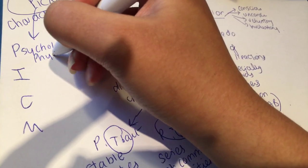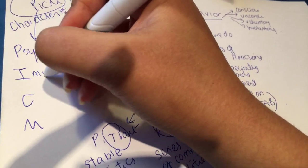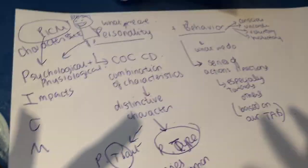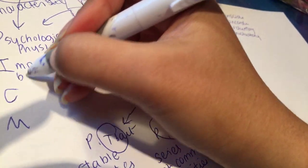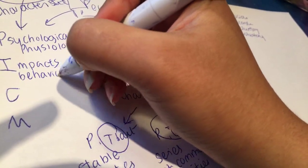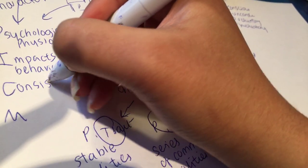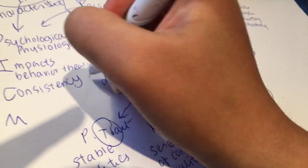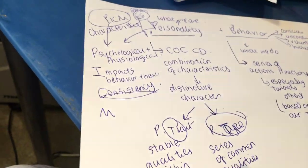Psychological as well as physiological. And personality impacts our behaviour and health. So it impacts not only behaviour, but behaviour and health. Personality can be consistent, or its consistency is a part of personality.